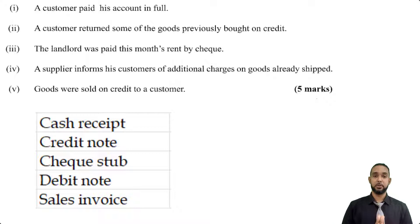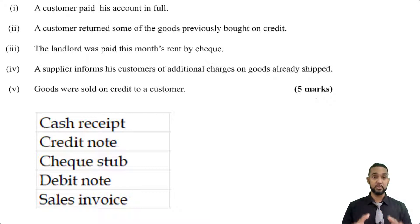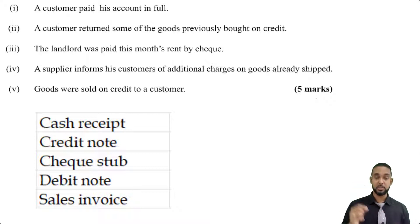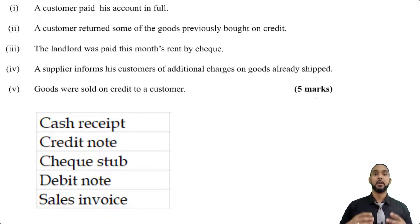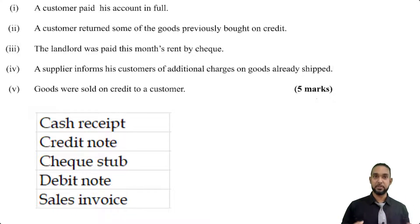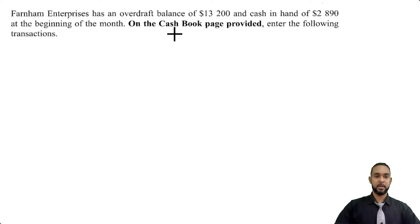If you disagree with any of the items I put here, or if you have alternatives, please leave them in the comments section below so we can get the discussion going and improve our knowledge together. Let's take a look at the last part, part C — a cash book.